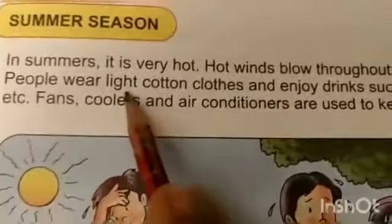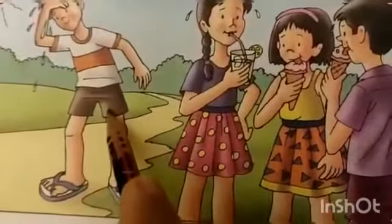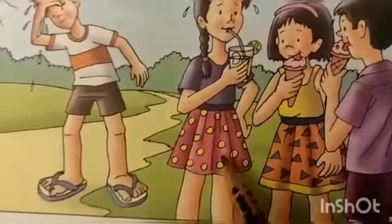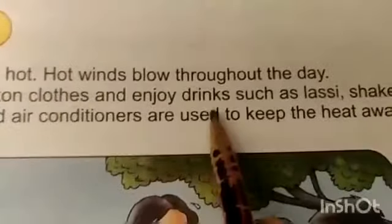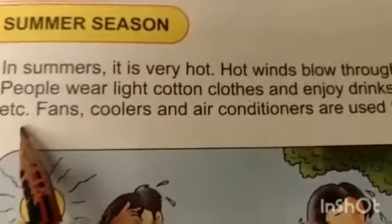People wear light cotton clothes — half sleeve t-shirts and shorts, or a blouse and skirt. We wear light cotton clothes in summer season. And we drink cold drinks such as lassi and shakes in summer season because these drinks are cold.